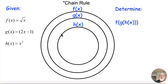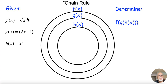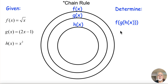So if we have a composition of functions, that's when you're going to be using the chain rule. I've got three functions here — f of x, g of x, and h of x — a square root function, a linear function, and a quadratic function. I want to determine what f of g of h of x is, and then subsequently what its derivative would be.